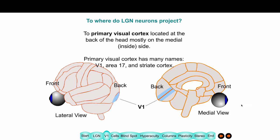Where does the LGN project to? It goes to the back of the brain — here is the brain from the outside. You can see a little of the primary visual cortex. If you separate the two halves, you can see the medial side of the brain, and here is the calcarine, drawn as a straight line. Your primary visual cortex surrounds this calcarine. It's given different names — we'll call it primarily V1, or area 17 in some textbooks, and in anatomy books it's called the striate cortex.